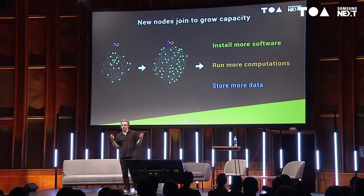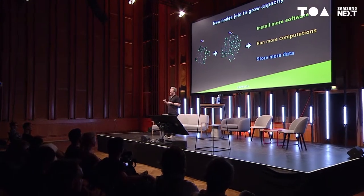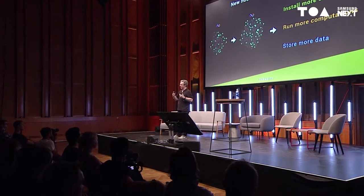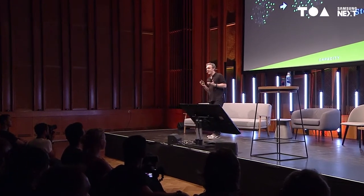A key aspect of DFINITY is that it scales out its capacity. New mining nodes can join the network to increase capacity, so you can install more software, run more computations, and store more data. A lot of people in blockchain talk about scalability — DFINITY isn't just pursuing a buzzword. If you look back on the Wayback Machine, on DFINITY.io back in 2015 the project had already amassed substantial research on ways to create a decentralized cloud. It's a very non-trivial task, reflected by the caliber of people on our team.